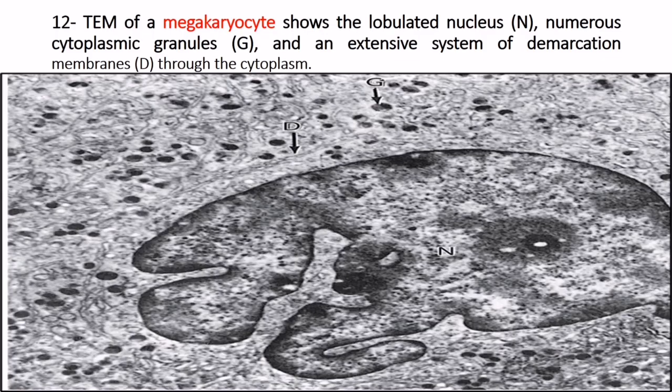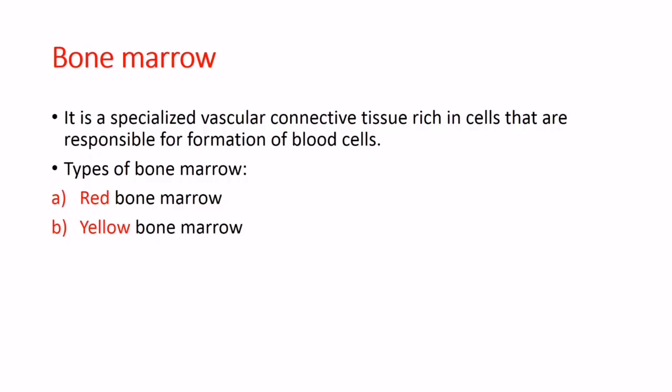Here is a transmission electron microscope image of the megakaryocyte showing the lobulated nucleus, numerous cytoplasmic granules, and an extensive system of demarcation membranes throughout the cytoplasm.